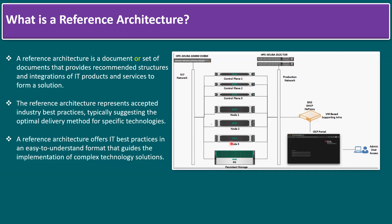For storage, container applications use Nimble Storage as persistent storage. To manage servers remotely we require an iLO network connected to an HPE Aruba 6300M out-of-band switch. For the production network we use an HPE Aruba 8325 top-of-rack switch. This is how the infrastructure is connected.